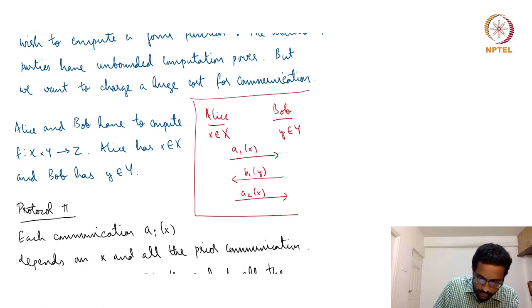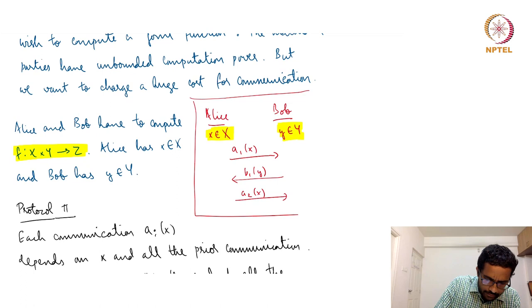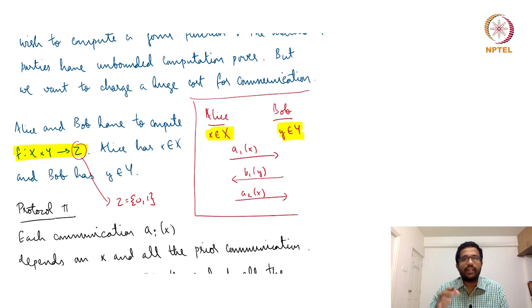This is the model of communication complexity. Alice has input x from domain X and Bob has input y from domain Y. They have to compute a joint function f(x, y), which belongs to the set Z. In our lectures, we will restrict Z to be binary or Boolean — the function they compute will be a 0/1 function.